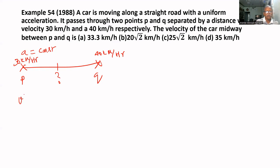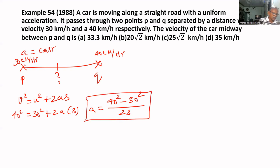V square equal to U square plus 2AS. V square equal to 40 square equal to U square is 30 square plus 2AS. S is not given. Therefore, we can say A equal to 40 square minus 30 square divided by 2S. That is acceleration.